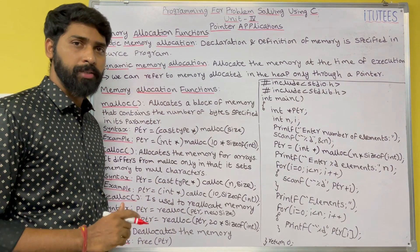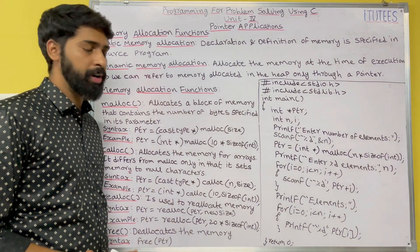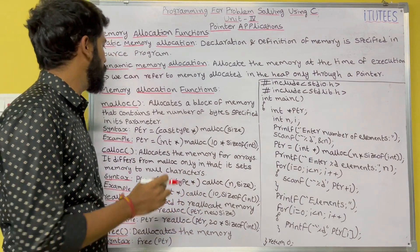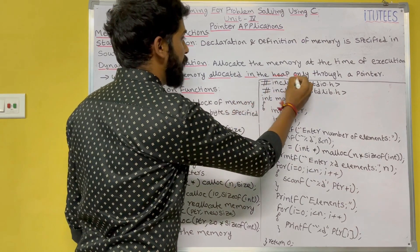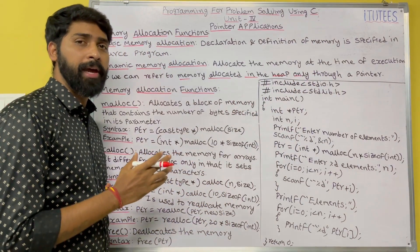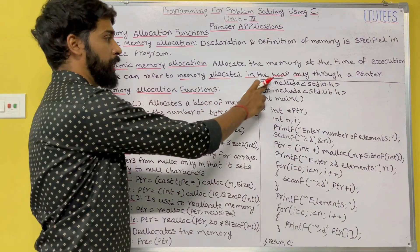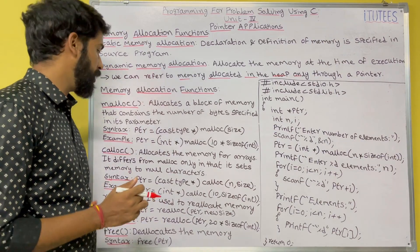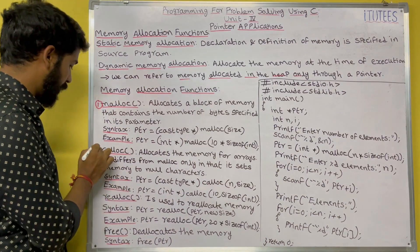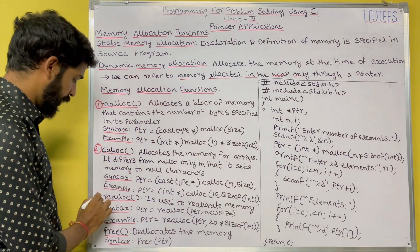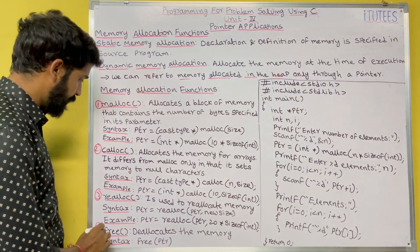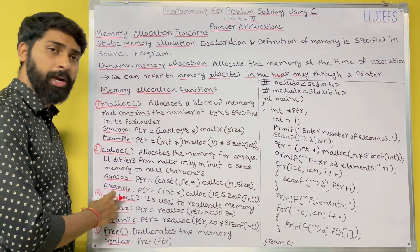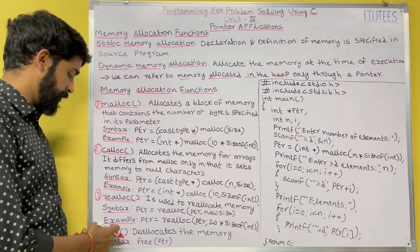Dynamic memory allocation allocates memory at the time of execution, and that memory is allocated in the heap. There are four dynamic memory allocation functions: malloc (memory allocation), calloc (contiguous allocation), realloc (reallocation), and free (deallocate the memory).